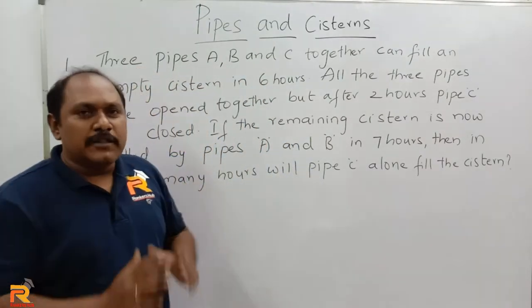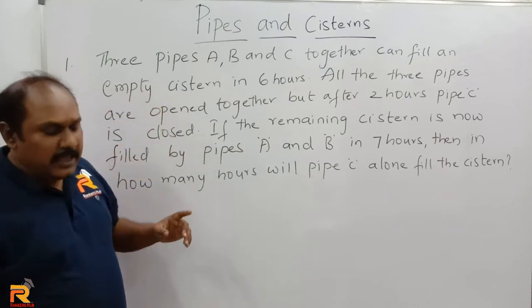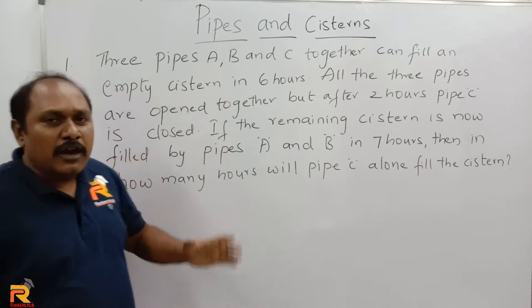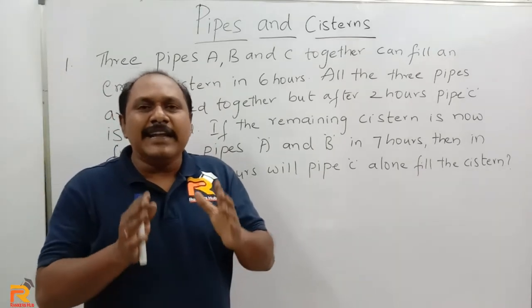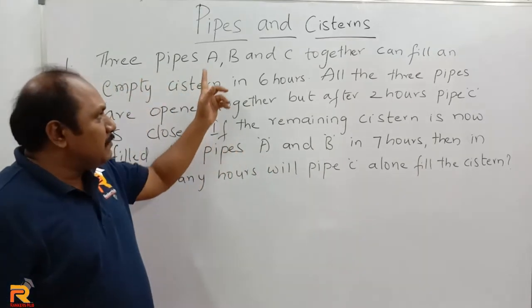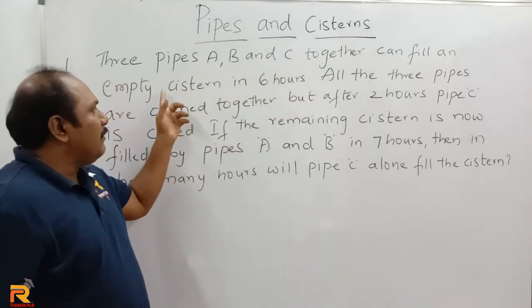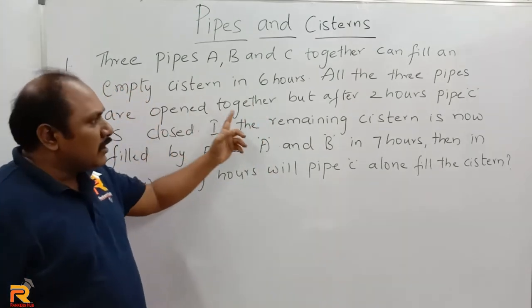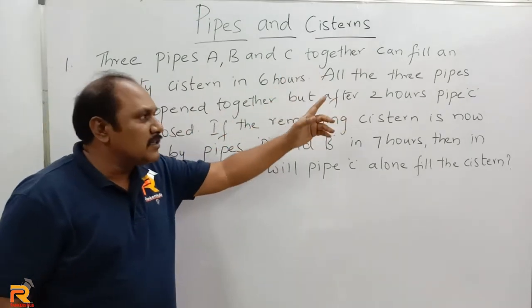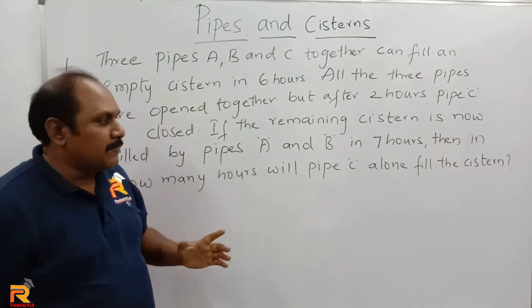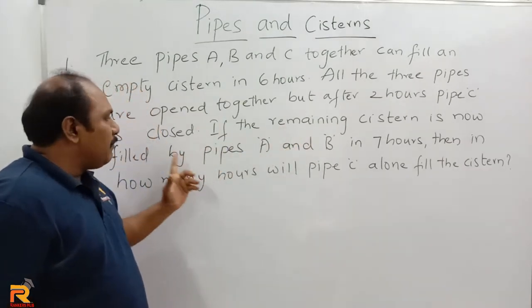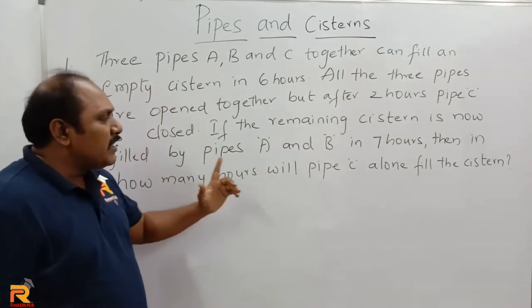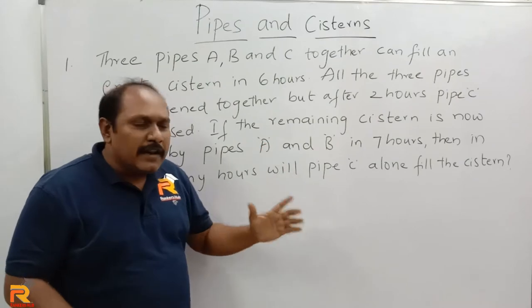Let us look into the first question. Three pipes A, B and C together can fill an empty system — a tank — in six hours. All three pipes are opened together, but after two hours pipe C is closed. If the remaining system is now filled by pipes A and B in seven hours, then in how many hours will pipe C alone fill the system?